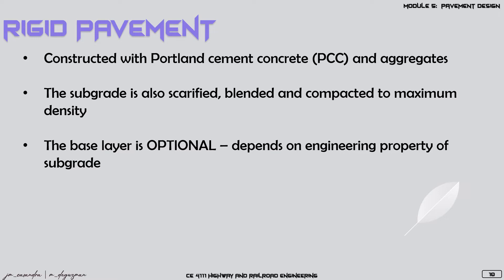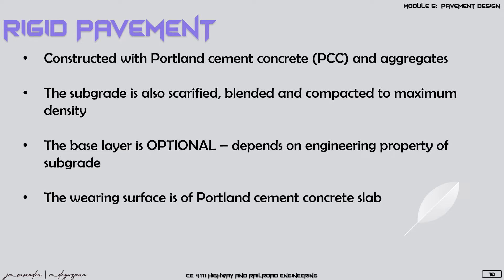The base layer for rigid pavements is an optional layer that depends on the engineering property of the subgrade. If the subgrade has very low strength, then we can add an additional base layer. But if the subgrade already has a very high strength or high bearing capacity, then the base layer may be omitted. The wearing surface for rigid pavement is a Portland cement concrete slab.